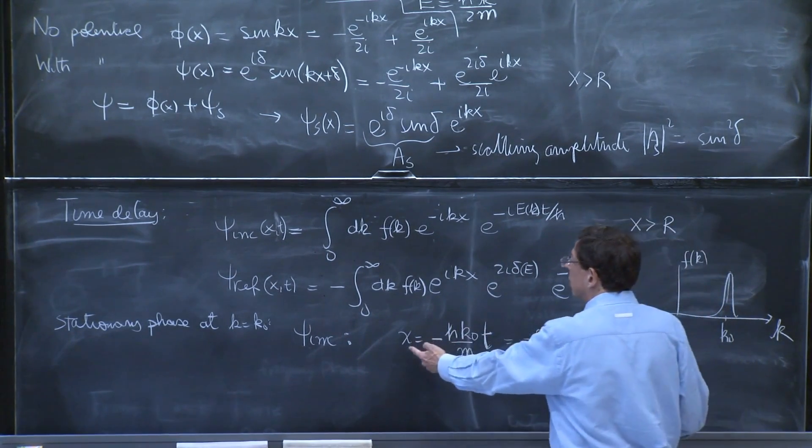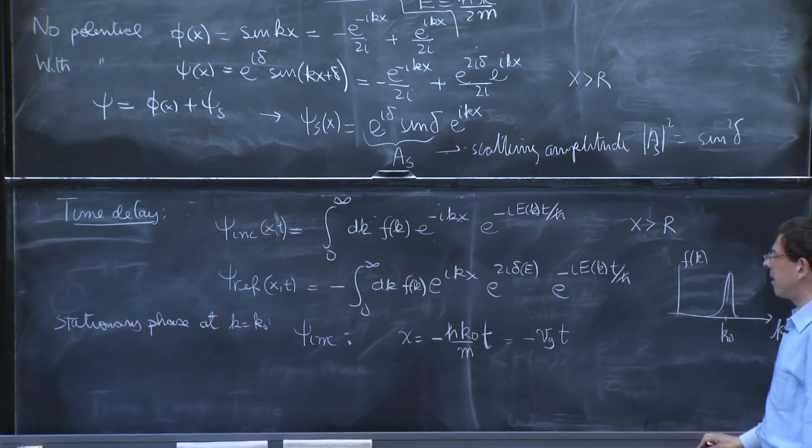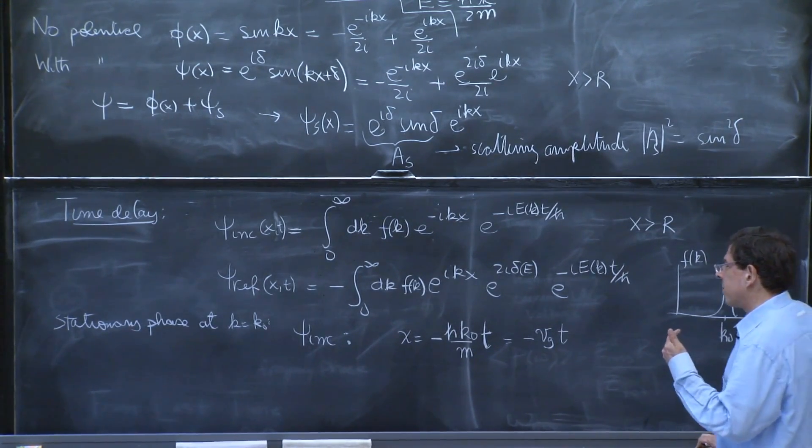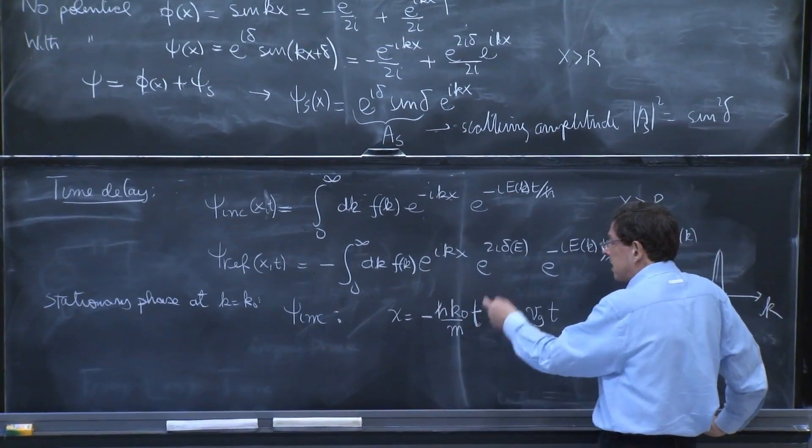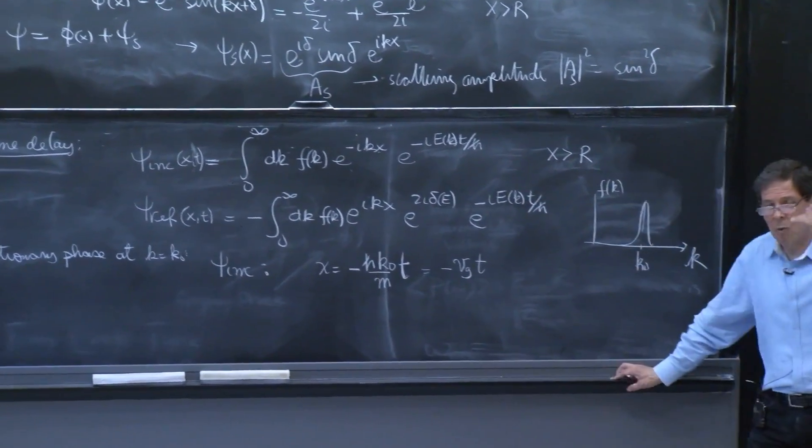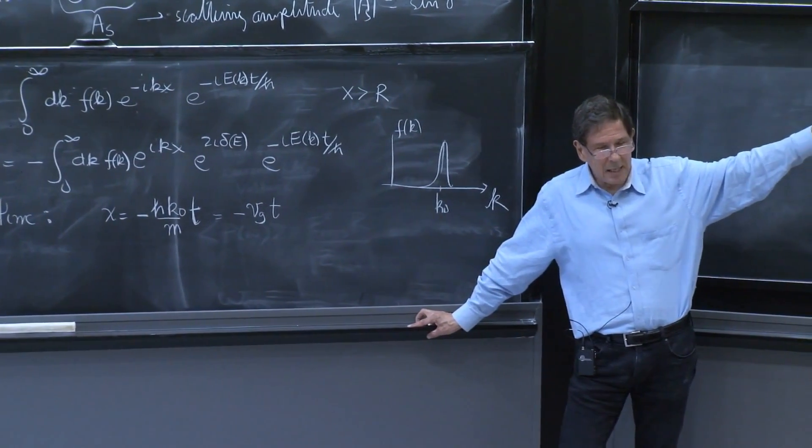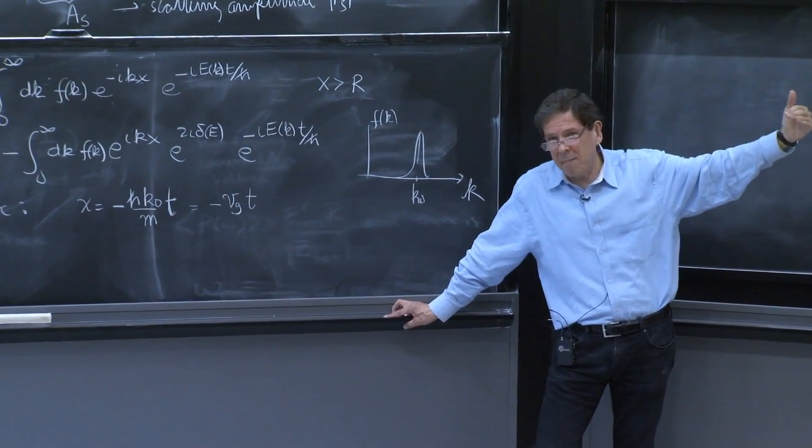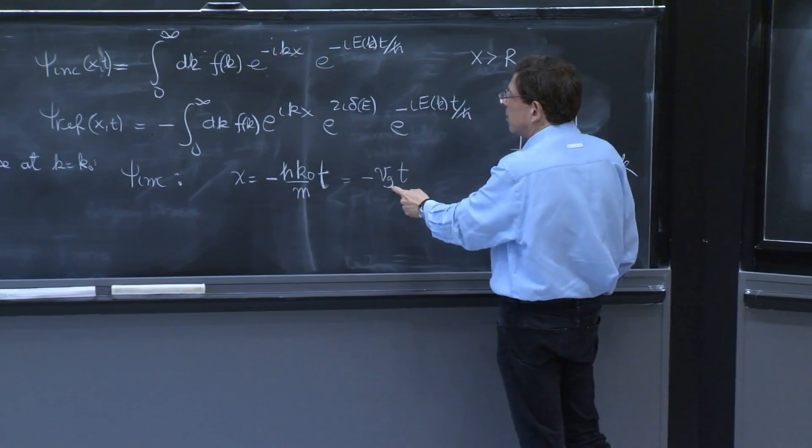This solution for psi incident only makes sense for x positive. In fact, x greater than r. So this solution needs x positive, so it needs t negative. Indeed, this is a wave that is coming from plus infinity. x equals plus infinity at time minus infinity. And it's going in with this velocity.